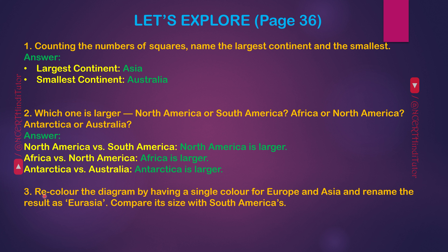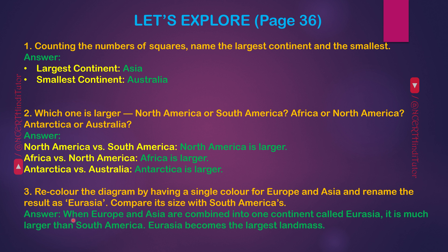Question 3: Recolor the diagram by having a single color for Europe and Asia and rename the result as Eurasia. Compare its size with South America's. Answer: when Europe and Asia are combined into one continent called Eurasia, it is much larger than South America. Eurasia becomes the largest land mass.